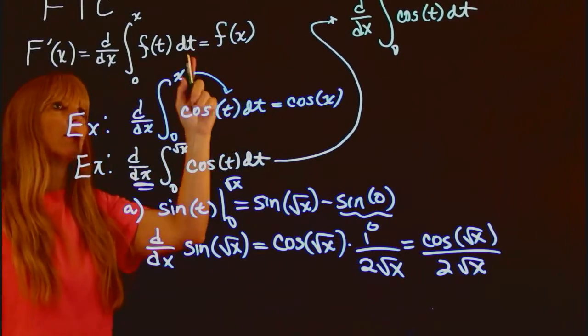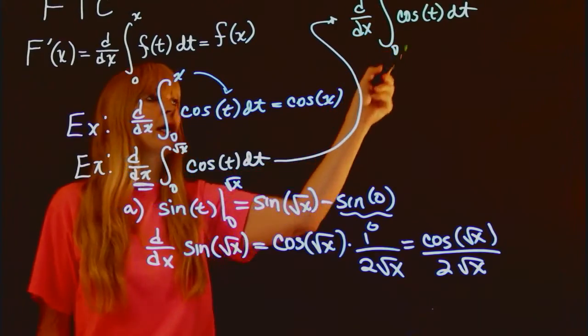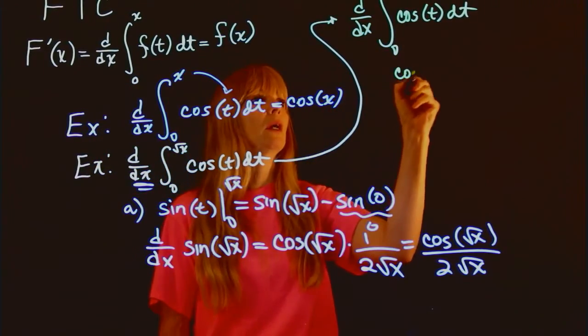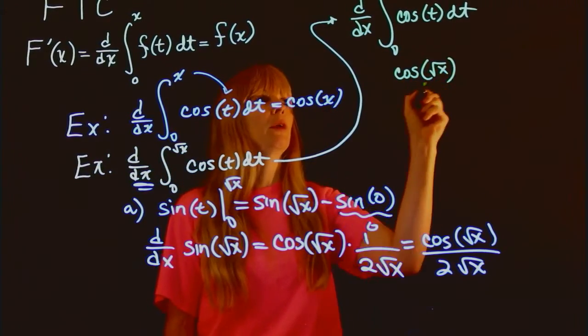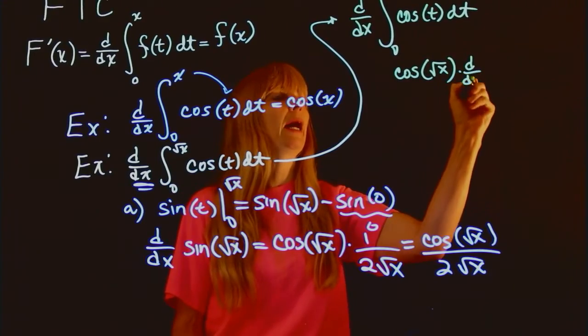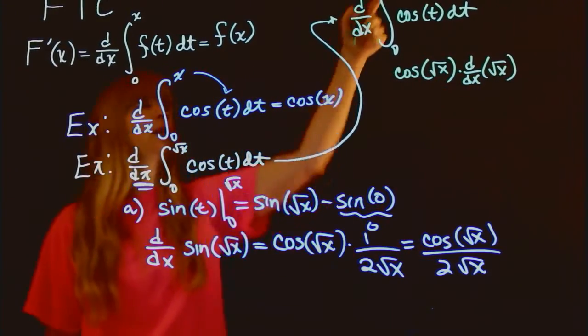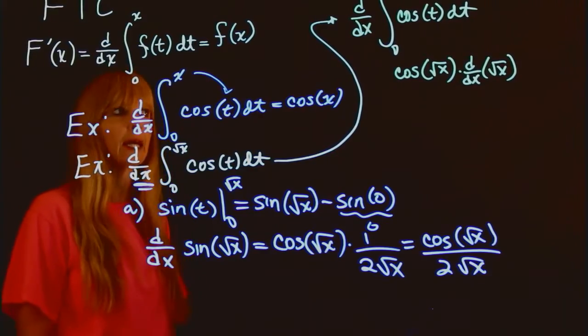So the only problem here is I can plug this in directly. So I end up with cosine square root of x, but now I have to differentiate this piece because it's not just an x.